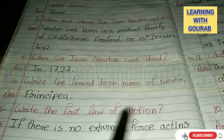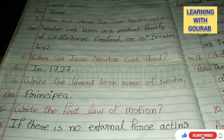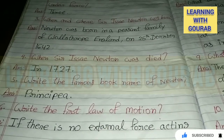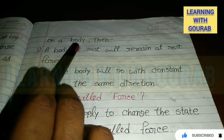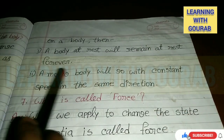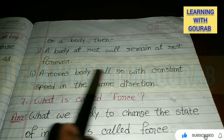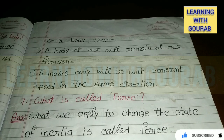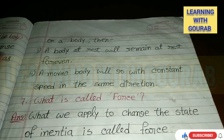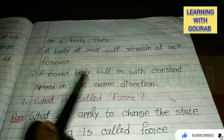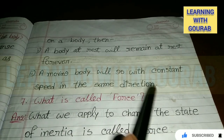Write the first law of motion. Answer: If there is no external force acting on a body, then a body at rest will remain at rest forever, and a moving body will go with constant speed in the same direction.